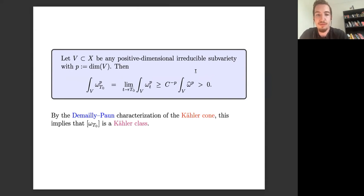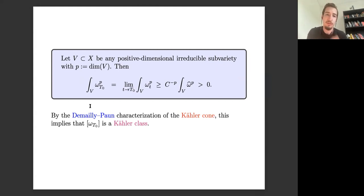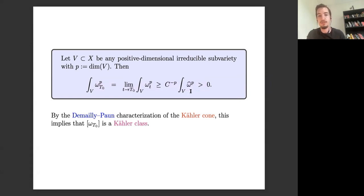Now we can use the Demailly-Paun criterion to show that for any fixed t₀ the limiting class is indeed a Kähler class, giving us the NEF condition. This follows immediately from the second order estimate: the integral over any irreducible analytic subvariety of ω_{t₀}^p is bounded below by c^{-p} times the integral of ω̂^p, and since ω̂ is a fixed Kähler metric that integral is positive. So the cohomology class doesn't degenerate.